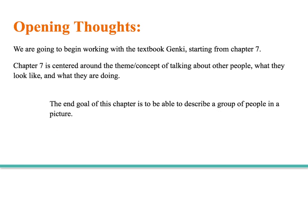Like I just said, we're starting from chapter 7, because chapters 1 through 6 are pretty much the equivalent of what you did already in Japanese 1 and 2, so we're not going to start from the beginning. Chapter 7 is centered around the theme of talking about other people — what they look like and what they're doing — and we're going to end this unit by describing a group of people that are in a picture.